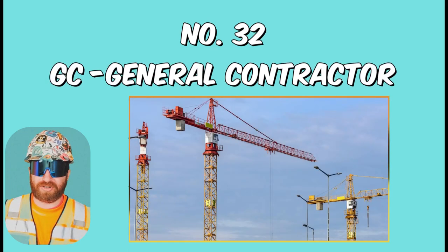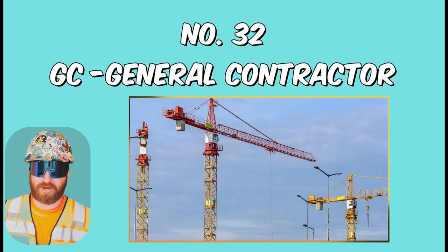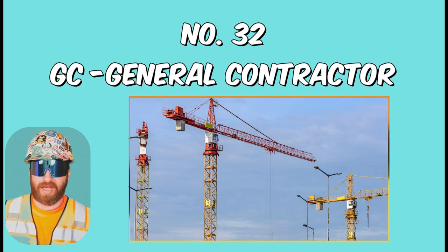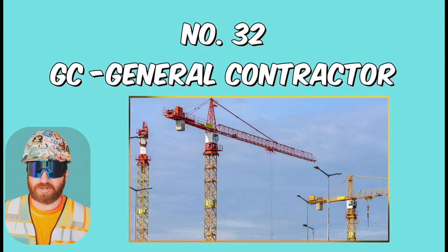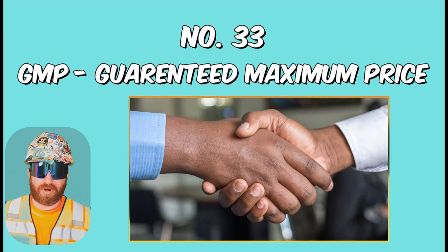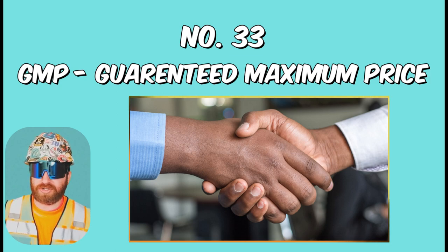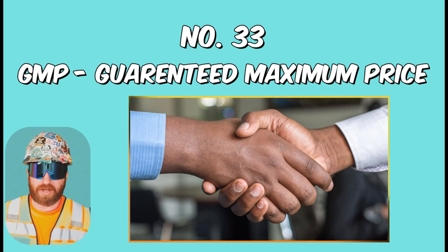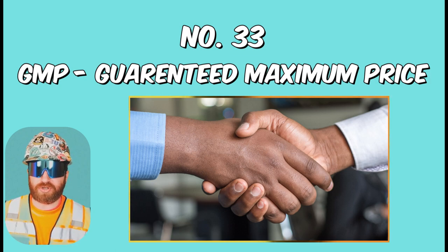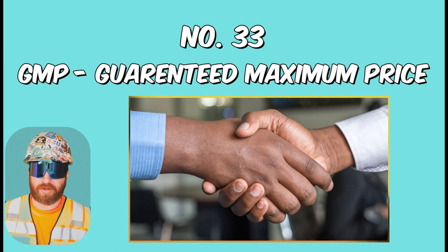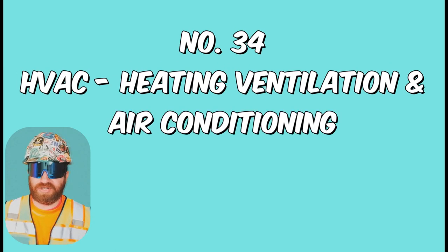GC, or General Contractor, is the main or prime contractor responsible for the oversight of construction. They may have both self-perform work and subcontractors working for them. Guaranteed Maximum Price is a type of owner-contractor agreement in which the dollar amount reflects the highest amount of labor, materials, and profit a contractor can charge. If there is a scope increase or decrease, your total GMP value can actually go up or down based on that.